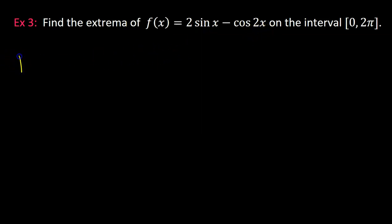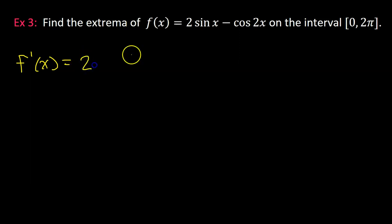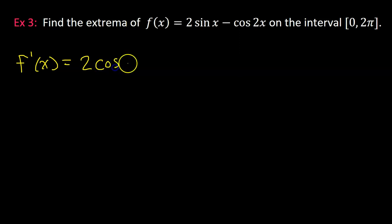As always, we're going to start by taking the derivative of the function. When you take the derivative and there's a constant, you can leave the constant alone and then take the derivative of whatever comes next. The derivative of sine is cosine, so I'm just going to end up with 2 cosine x for the first term.